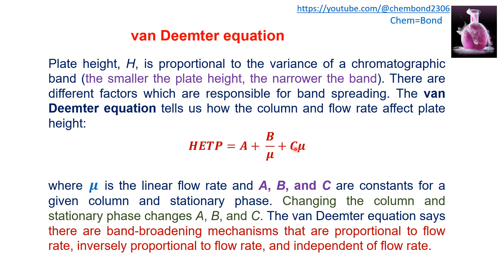By changing the A, B, and C terms of the column, the column efficiency changes. The Van Deemter equation shows three types of band broadening mechanisms: the C term (Cμ) is proportional to flow rate, the B term (B/μ) is inversely proportional to flow rate, and the A term is independent of flow rate since it contains no μ.